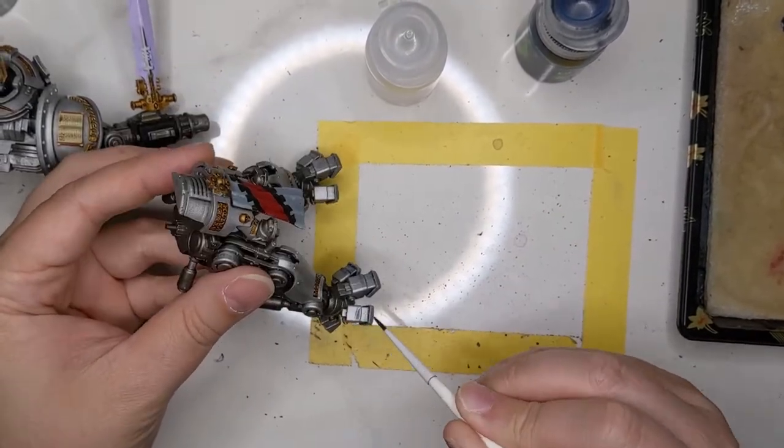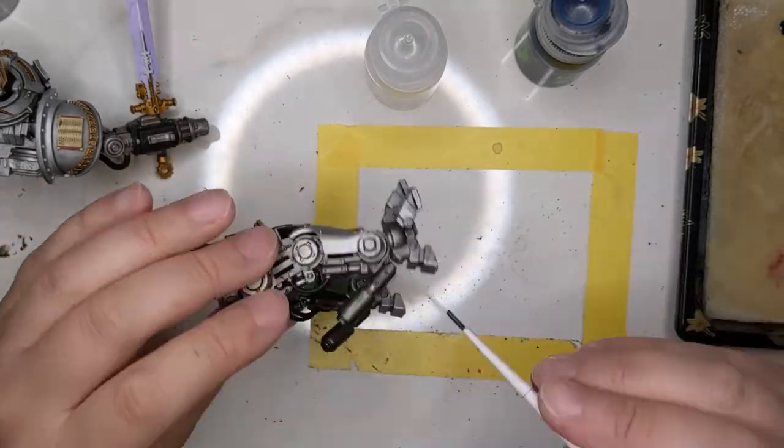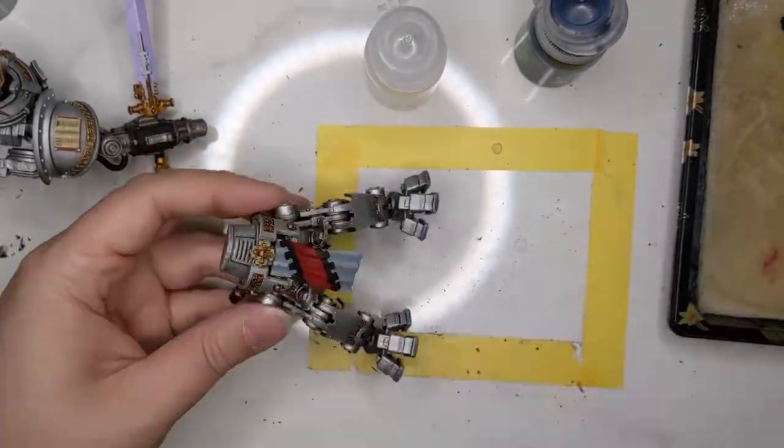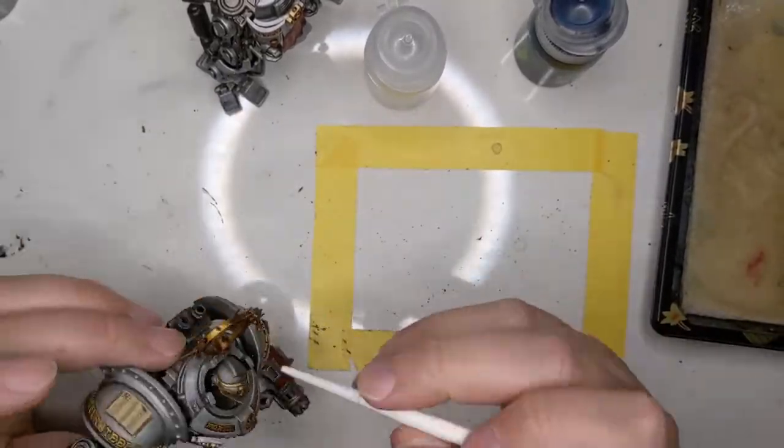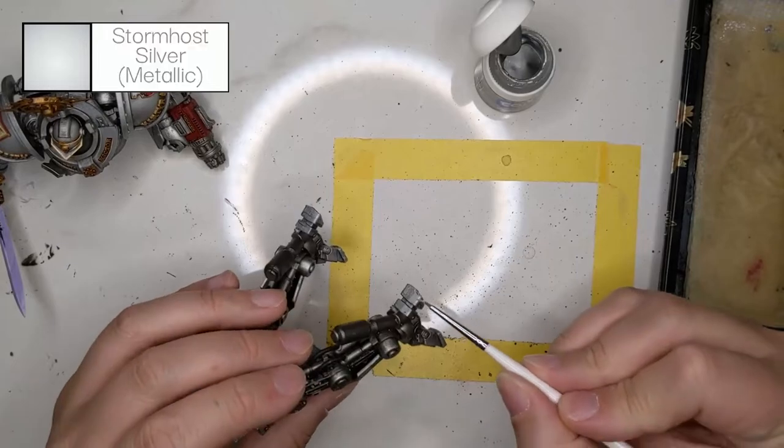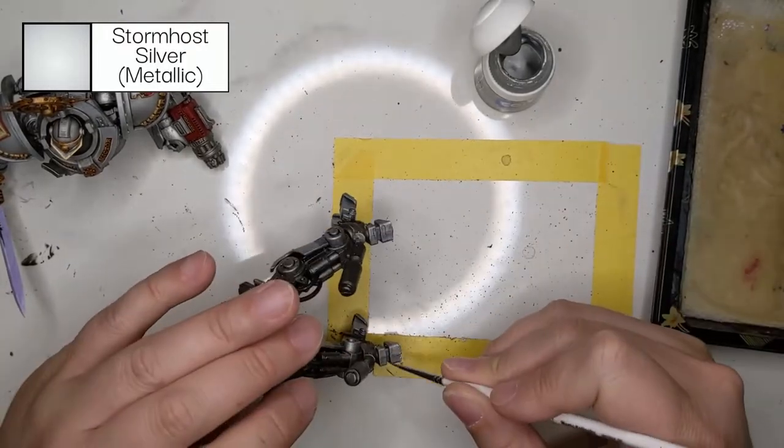Now we're doing the characteristic bluing of the Grey Knight armor. We're using Drakenhof Nightshade thinned with a little Lahmian Medium, because Drakenhof by itself can be pretty stark. We're applying this to basically the underside of all the main armor plating.